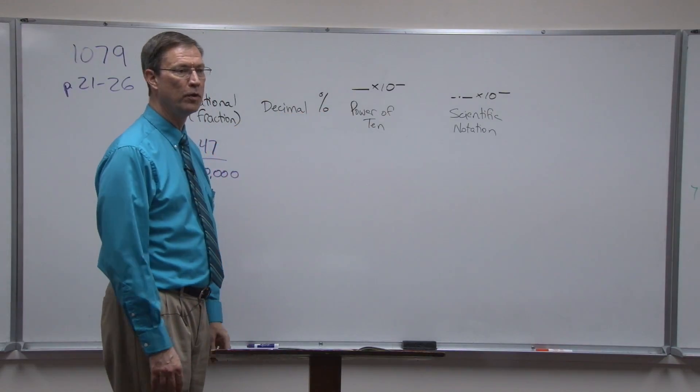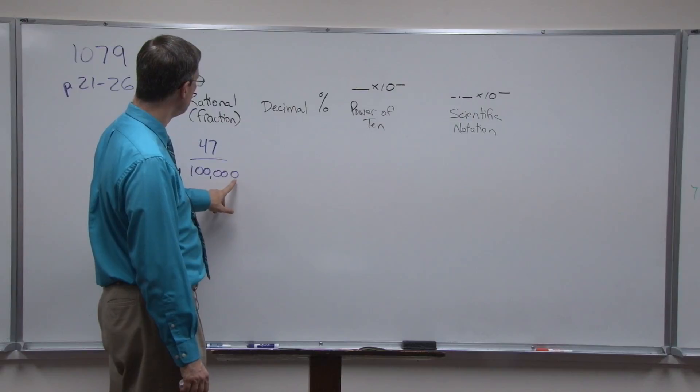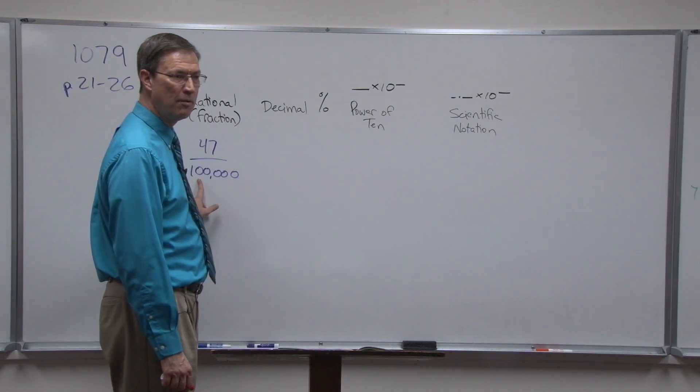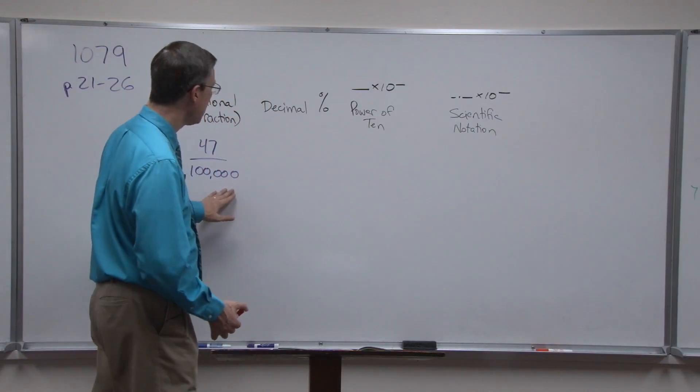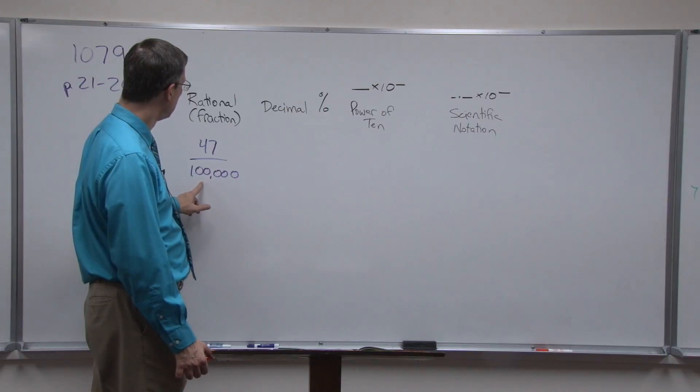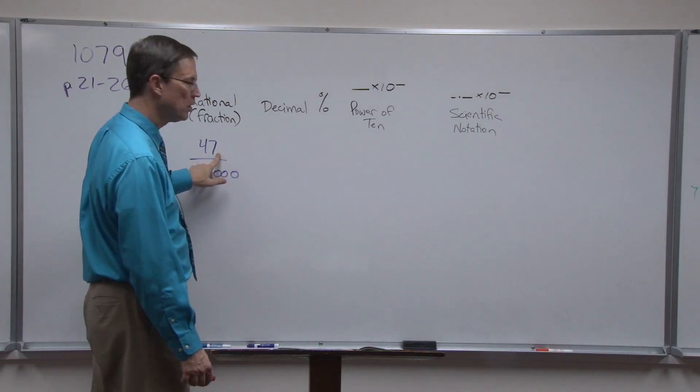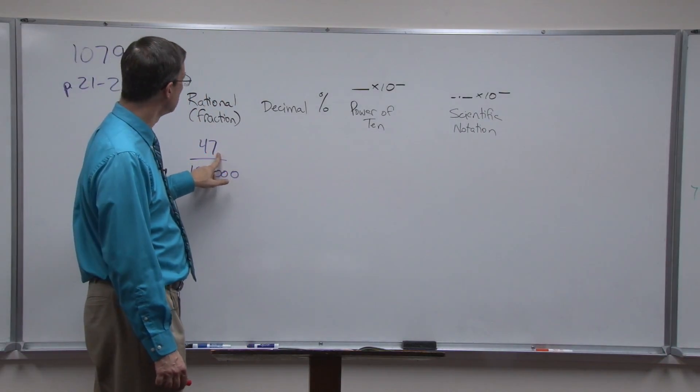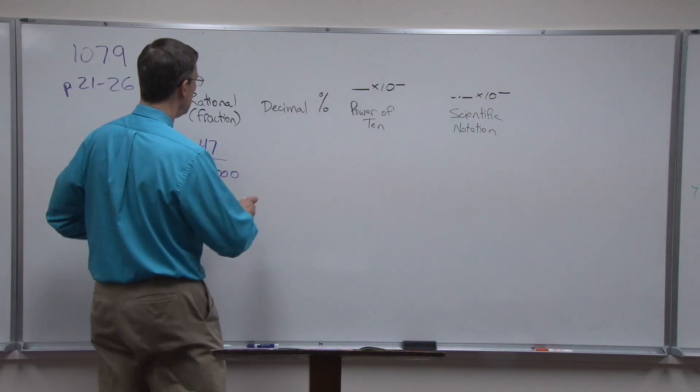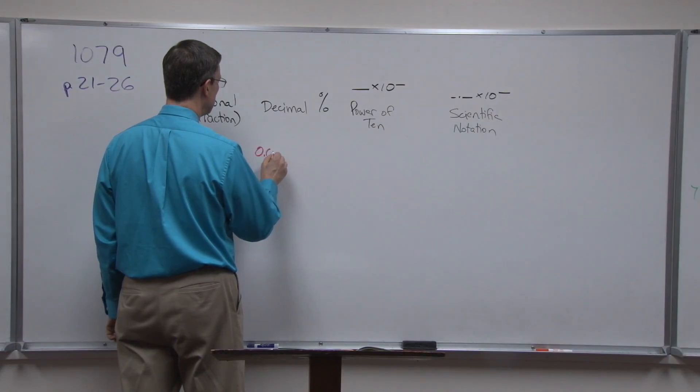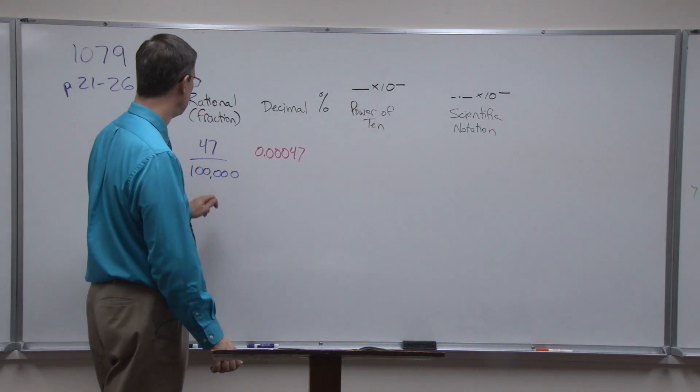Let's take this number here, 47 over 100,000, and figure out what that would be as a decimal. Now a shortcut is that you count the number of zeros whenever you're dividing by like a hundred or a thousand or ten thousand. So here we're dividing by a hundred thousand, it's all zeros, so count five zeros. Then we're going to move the decimal five places. Remember it always starts at the end, just like a period on a sentence, and we move it five places to the left. But when I do that, I have to fill in with some zeros.